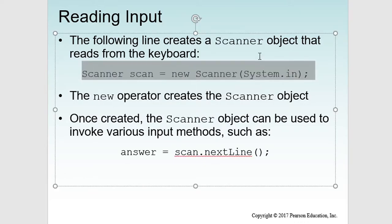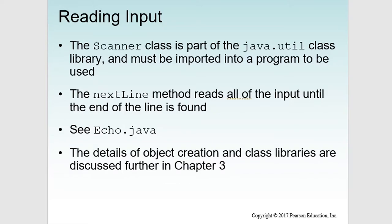A new operator creates the Scanner object. Once created, the Scanner object can be used to invoke various input methods such as nextLine. The Scanner class is part of the java.util class library and must be imported into the program to be used. The nextLine method reads all of the input until the end of the line is found. Details of object creation and class libraries are discussed further in chapter 3.